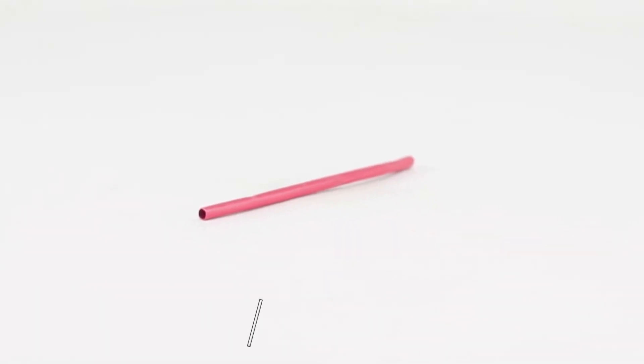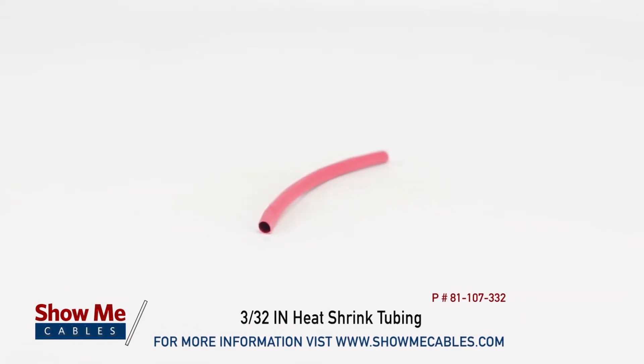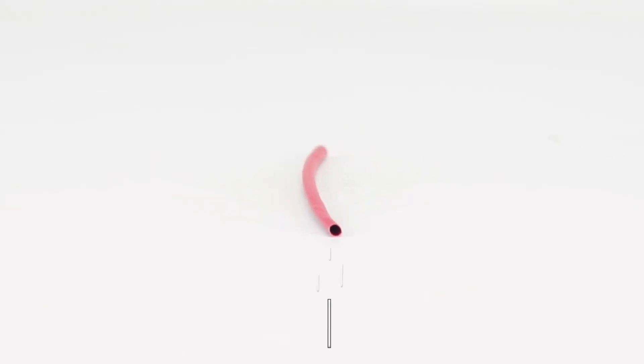Our 3/32 inch heat shrink is 2-to-1, which means the heat shrink will shrink up to half its original size. It is rated for high temperatures up to 257 degrees and will start shrinking at 194 degrees.